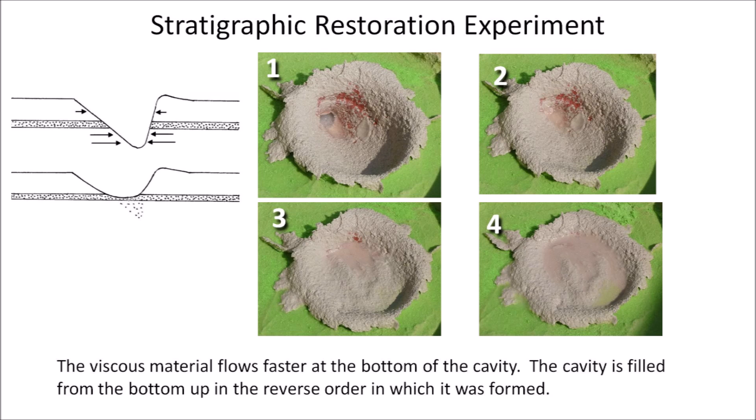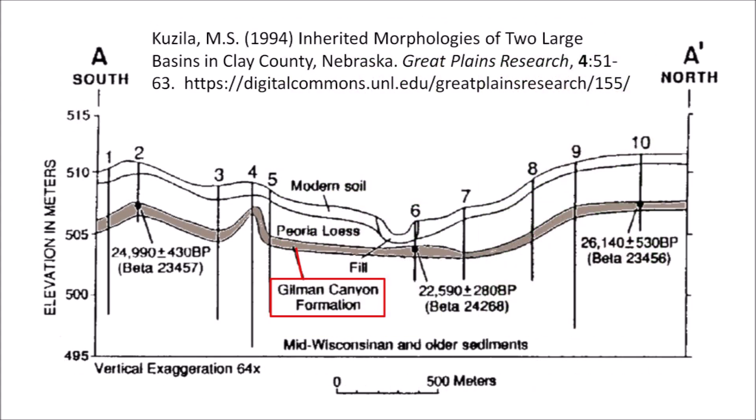The horizontal stratigraphy of an impact cavity can be restored partially by viscous relaxation. These photographs show an experimental cavity made by an ice projectile that penetrated the red sand layer. As viscous relaxation progresses, the cavity becomes shallower and the stratigraphy is restored. However, the stratigraphy is not restored to its original level. This is illustrated in the cross-section of a Nebraska basin investigated by Kuzila in 1994. The basins do not have horizontal stratigraphy — they retain a curved subsurface.